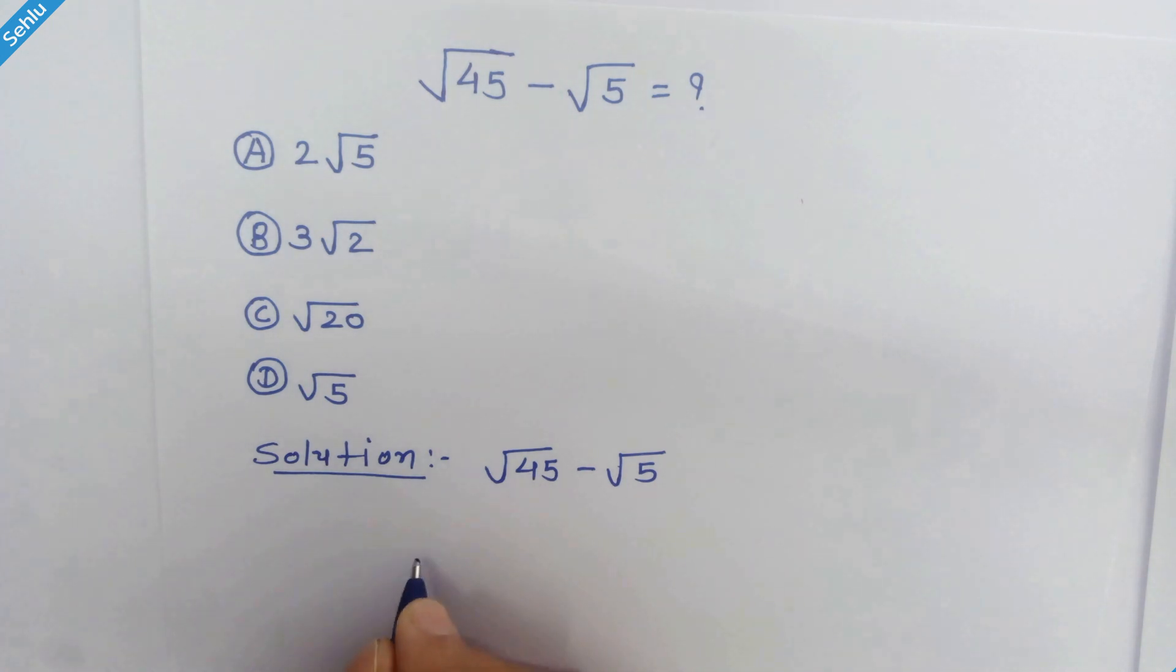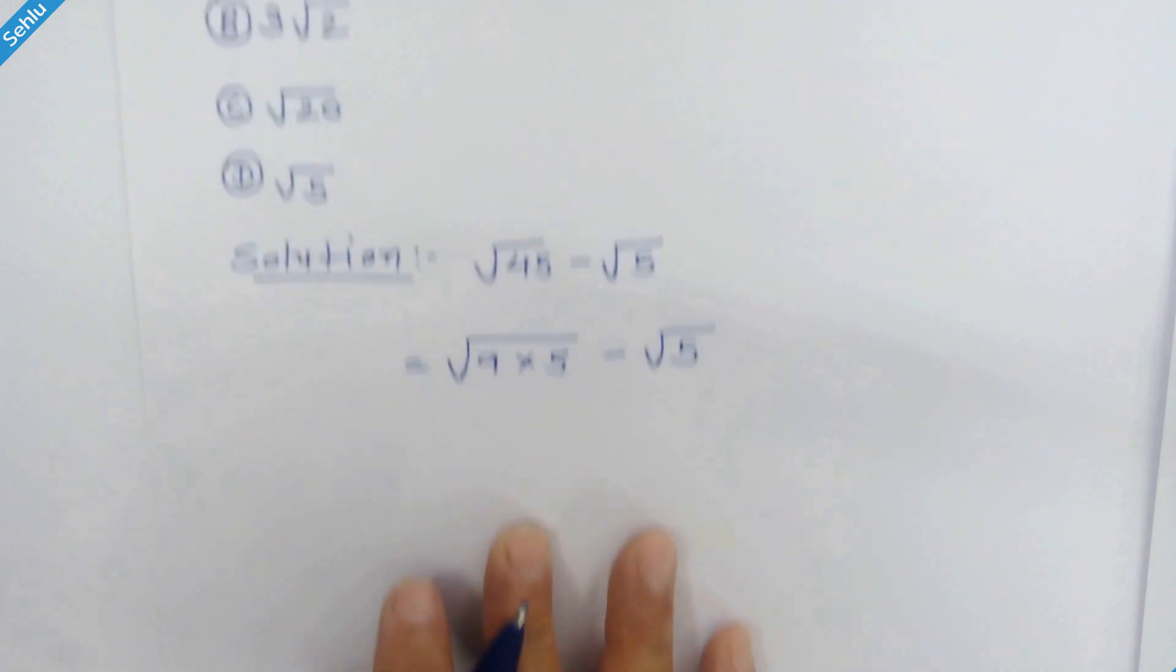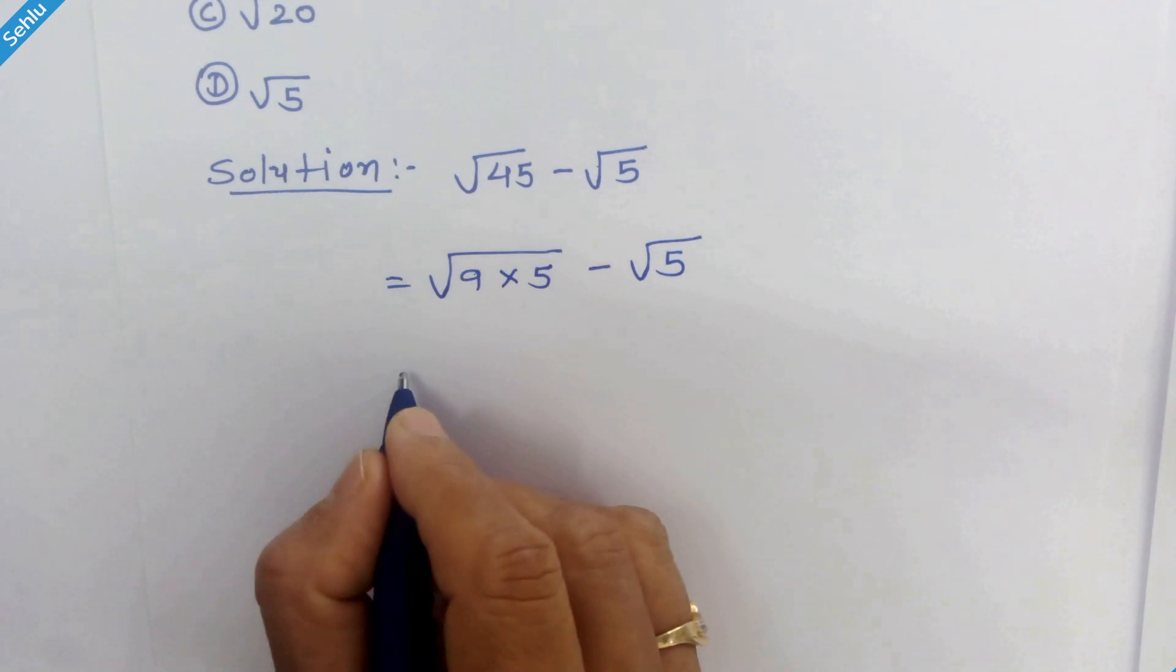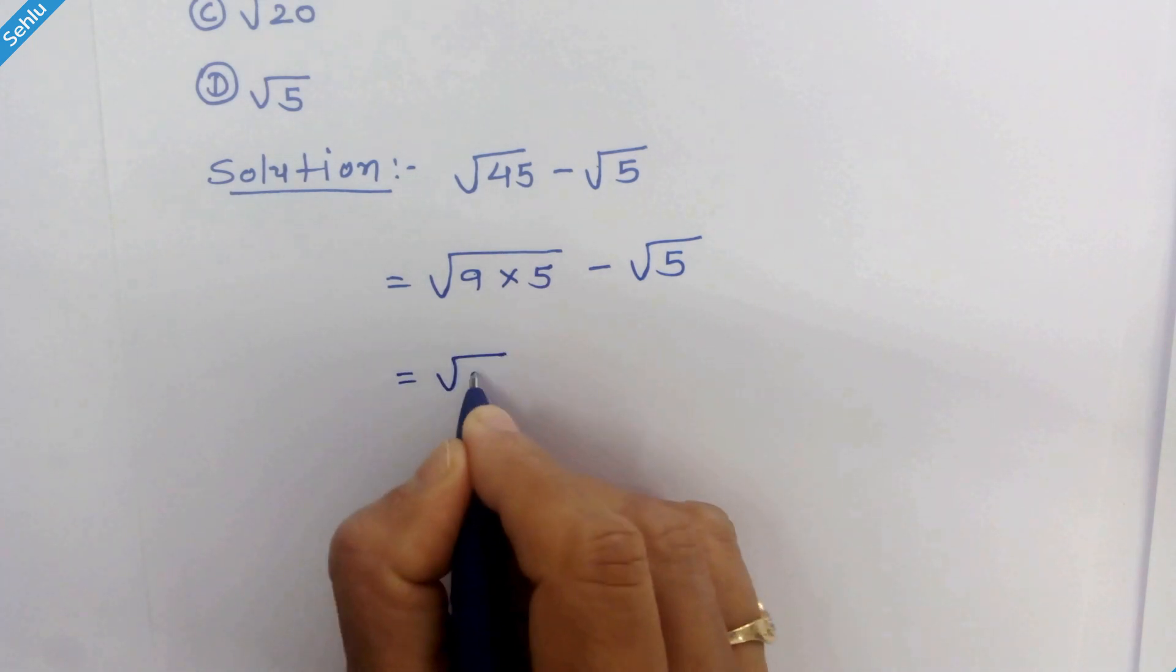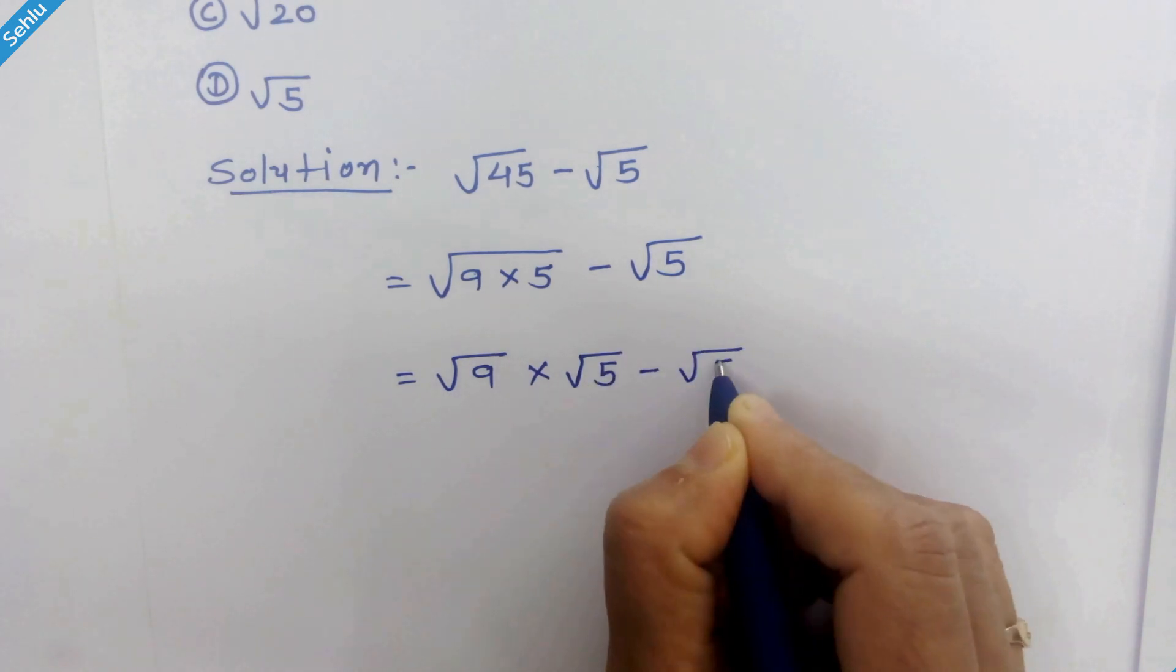45 can be written as 9 times 5. So we can write it like square root of 9 times 5 minus square root of 5. Now it can be written as square root of 9 times square root of 5 minus square root of 5.